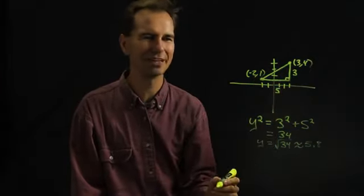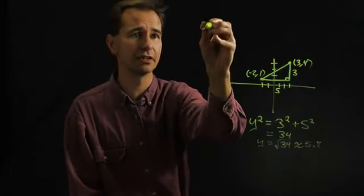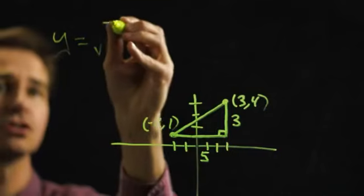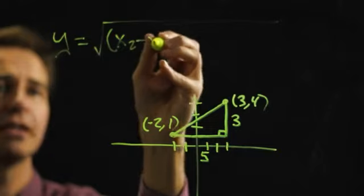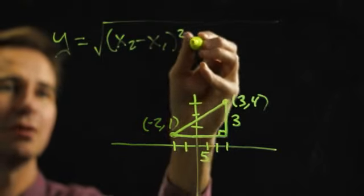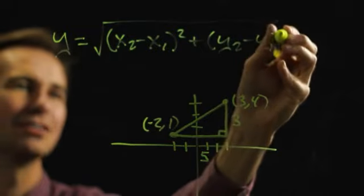So, 5.8 is reasonable. Sometimes, you see an equation in textbooks that looks like this: y equals the square root of (x2 minus x1) squared plus (y2 minus y1) squared.